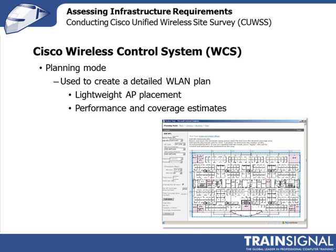You can bring in a site plan, place your access points on that site plan, and actually generate performance and coverage estimates from that. Bear in mind, at this point you've already done your Layer 2 site survey, so you already know where you're going to place your access points. You can open this tool in planning mode, generate the access points, and then move them to the precise locations where you're making a recommendation. You can also change the antennas on the specific access points.